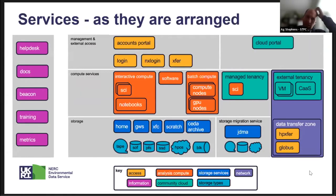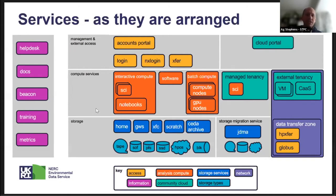Looking at how services are arranged: information services are on the left. On the right is significant use of cloud services. The top left covers access systems, login, and basic transfer. Everything in orange is our compute services, where people log in to run analysis or schedule jobs on our batch cluster called Lotus — for large-scale, potentially parallel jobs. At the bottom is all storage.